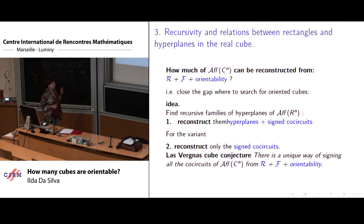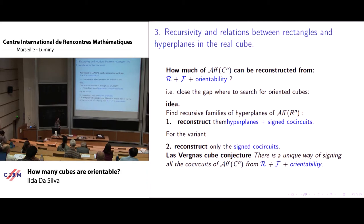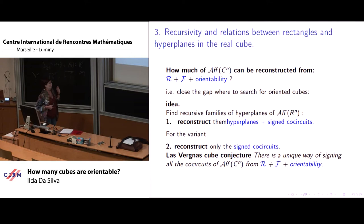And here there is a cube conjecture of Las Vergnes saying that in this weaker reconstruction, only of the signed circuits, the conjecture says you will get all the real affine cube. So supposing if you assume, if you start by the underlying real affine cube, so not oriented, you have the real cube not oriented, the conjecture says that if you canonically orient it from those families and orientably, you will get all the orientation, all the signed co-circuits.